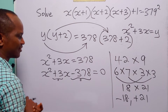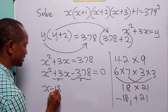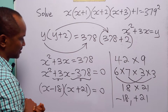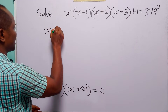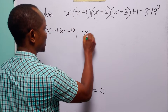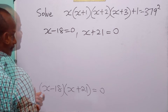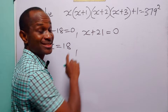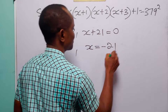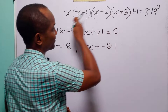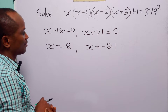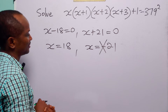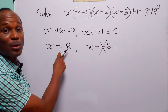So we can write the left hand side as (x minus 18)(x plus 21) equals 0. From here, we have x minus 18 equals 0, or x plus 21 equals 0, giving x equals 18 or x equals minus 21. These are the two real values of x that satisfy this equation. But remember we were told x is a positive integer, so x equals minus 21 is disqualified. The value of x that satisfies this equation is x equals 18.